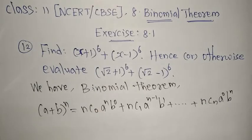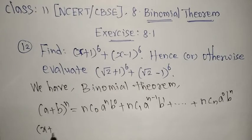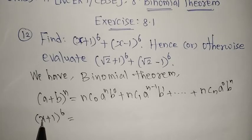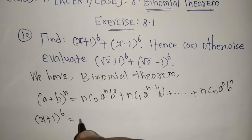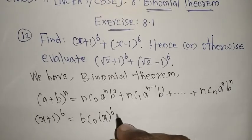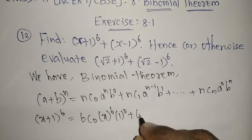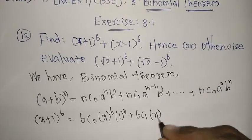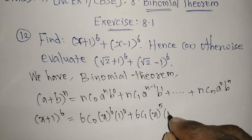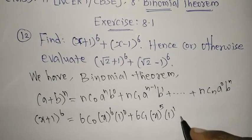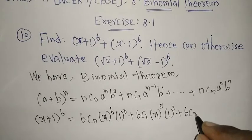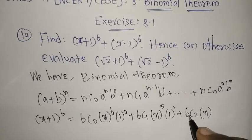Now we substitute a = x, b = 1, and n = 6 to find (x+1)⁶. We get: 6C0 · x⁶ · 1⁰ + 6C1 · x⁵ · 1¹ + 6C2 · x⁴ · 1² and we continue writing up to the 6th term.